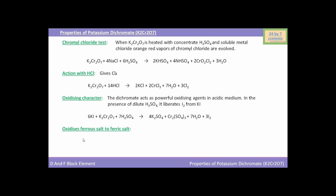Now we will see how potassium dichromate oxidizes ferrous salt to ferric salt. FeSO₄, i.e. ferrous sulfate, when reacted with potassium dichromate K₂Cr₂O₇ in presence of H₂SO₄, the reaction yields K₂SO₄, i.e. potassium sulfate, and Fe₂(SO₄)₃, i.e. ferric sulfate — this is the ferric salt — and as a by-product water and chromium sulfate. So you can see how potassium dichromate oxidizes ferrous salt to ferric salt.